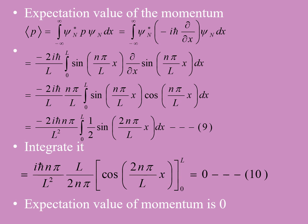Now we have to find the expectation value of the momentum. The expectation value of momentum equals the integral from minus infinity to infinity of psi_n* times p-hat times psi_n dx. Since p is an operator, we substitute p-hat equals -iℏ(∂/∂x), giving the integral of psi_n* times (-iℏ ∂/∂x) psi_n dx.